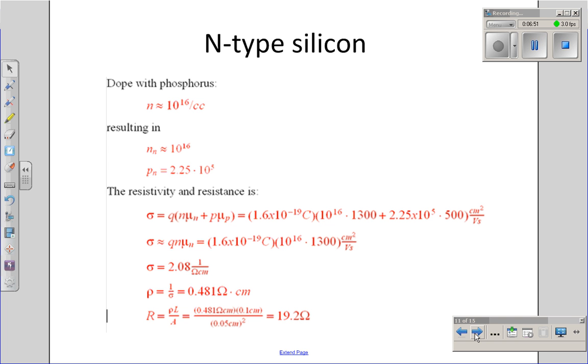I can also dope silicon with phosphorus. Phosphorus has five electrons in its outer shell. Four of the electrons fill the covalent bonds. That fifth electron has no place to go. It's free to roam throughout the crystal, making an n-type material.